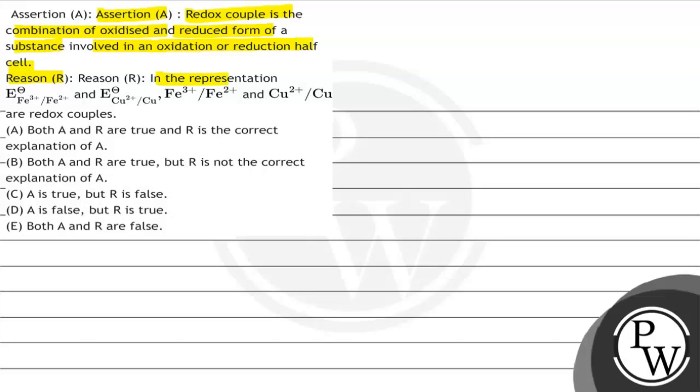Reason says in the representation E0 for this redox couple and E0 for this value Fe3+ and Fe2+ and copper 2+ and copper are redox couples.